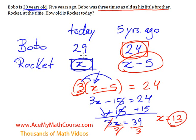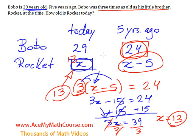So Rocket is 13 years of age today. Five years ago he was 13 minus five, so eight years old. Note that Bobo was 24 back then, which is three times eight. So we have solved the problem correctly.